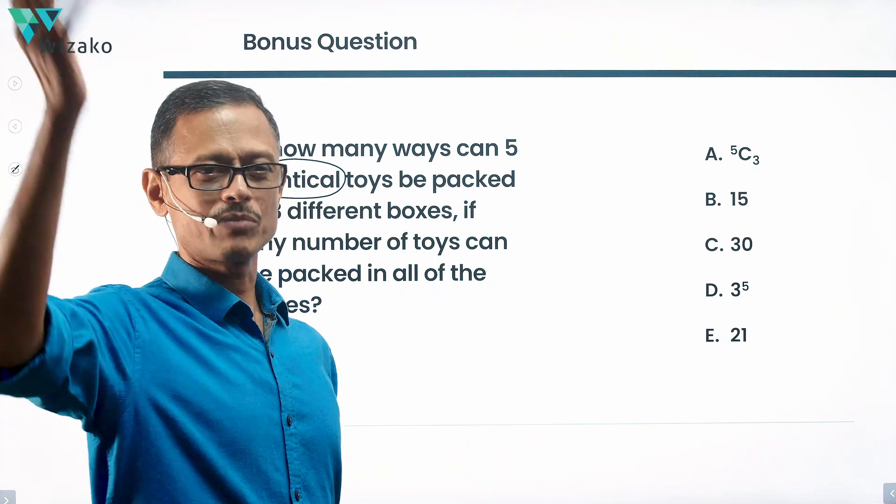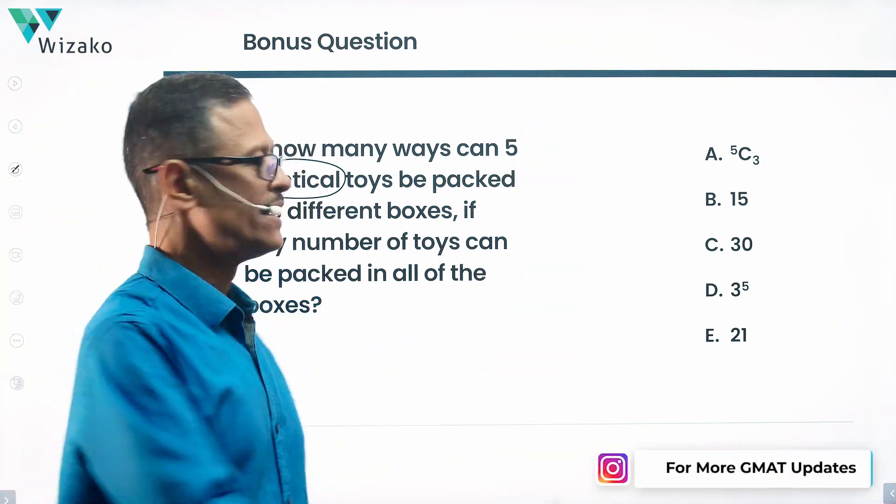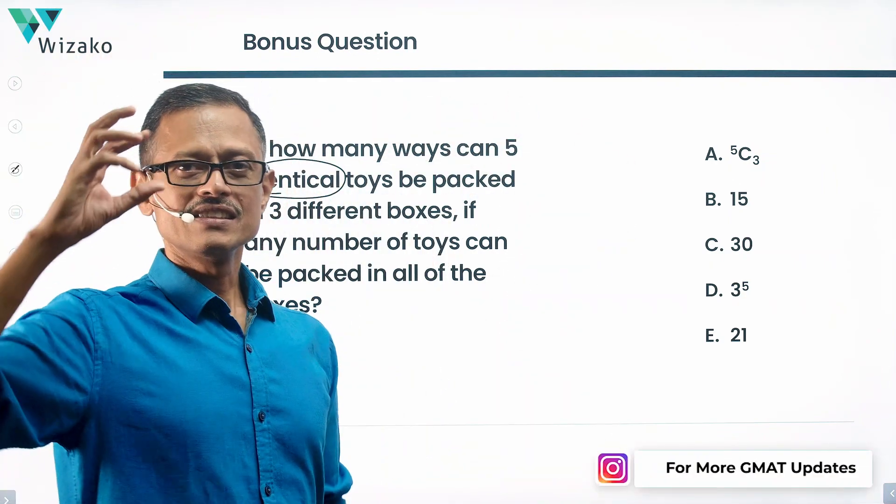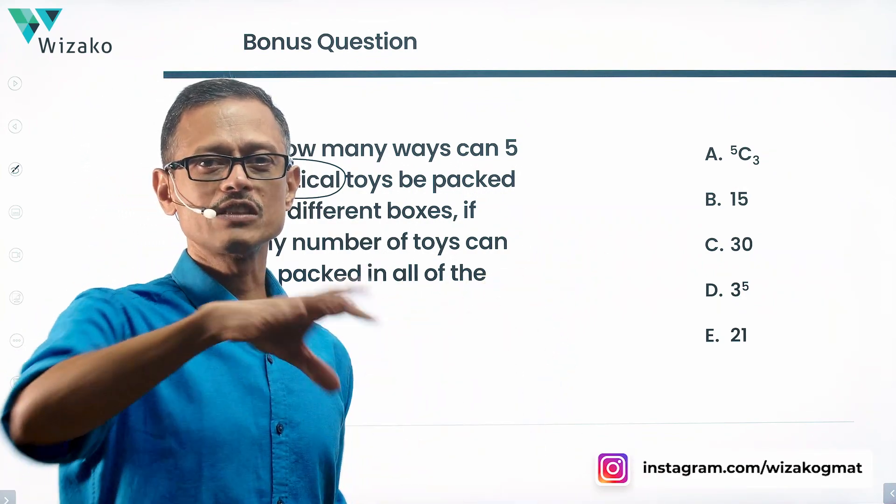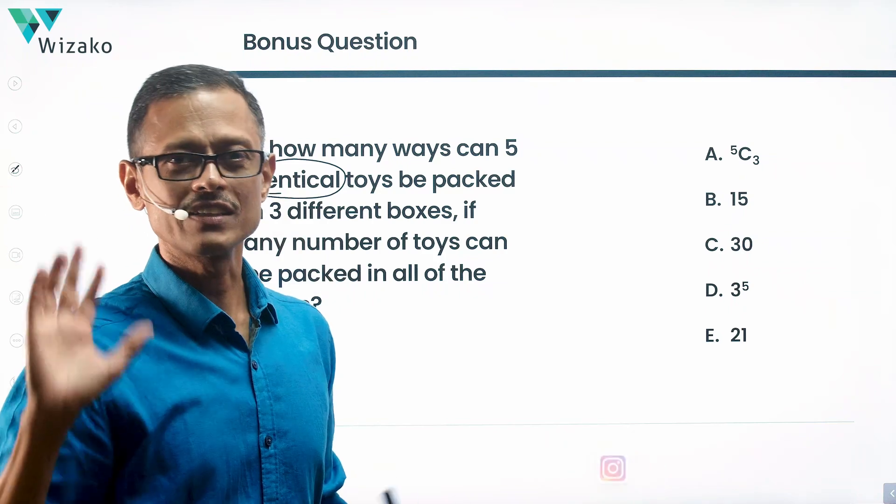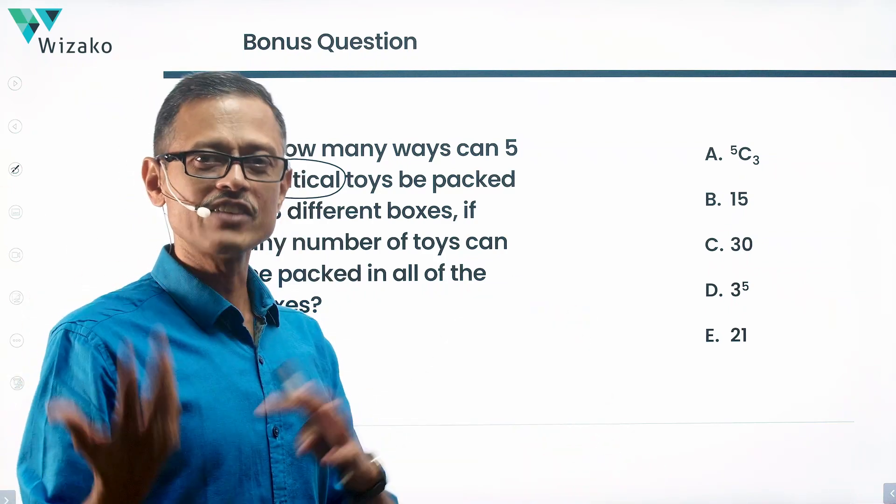The toys are of that size that you can pack probably 100 of them, 50 of them, however many. We have five with us. These five can go all of them in box one, all of them in box two, all of them in box three, or you can have three, one, one. That's a possibility. Multiple ways you can do it.